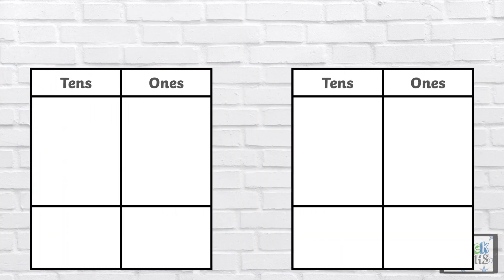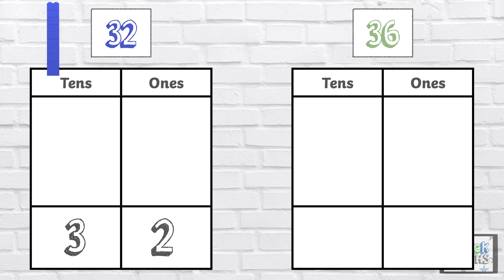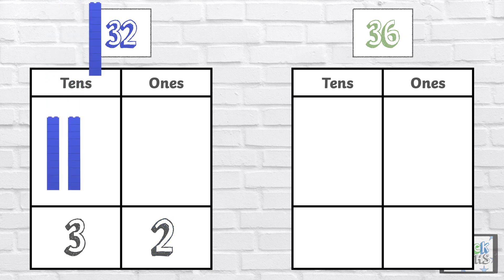Here are two more numbers. Which number is greater? The number 32 has three 10s and two 1s: 10, 20, 30, 31, 32.